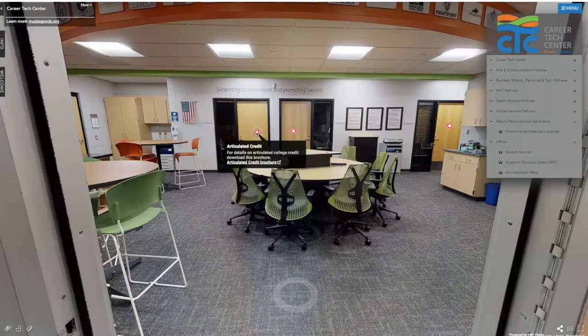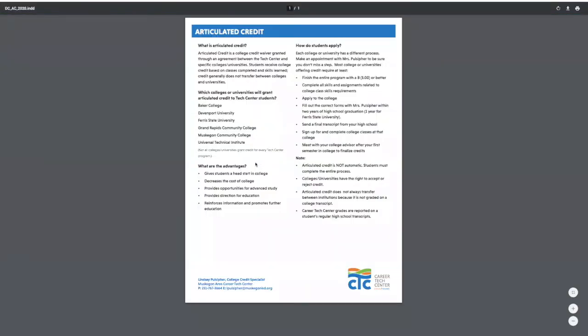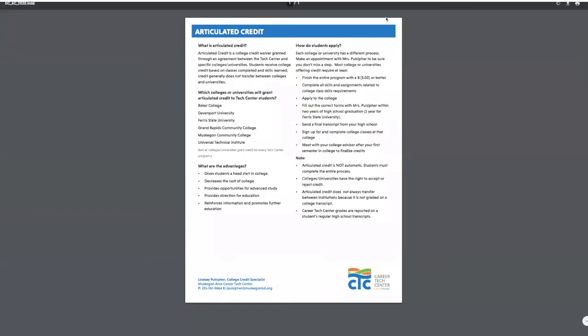We also have our college credit specialist down here in the ARC. Clicking on one of these doors you'll see the link to articulated credit — every CTC class offers articulated college credit, which is a credit waiver granted through an agreement we have with specific schools. It depends on what CTC class you're taking as to which schools we offer articulated credit with, so I advise you to go to our CTC classes page and click on the individual class you'd like to take to find out specifics.